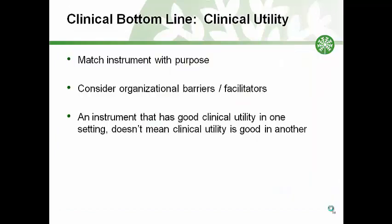The clinical bottom line for clinical utility includes more than ensuring that cost, length, and time are suitable. It is also important that the instrument matches the most important clinical question being asked by the patient and the clinician. Consider organizational barriers and facilitators such as whether the medical record supports tracking of measurements over time. Also consider leadership support for follow-up assessments. Instruments that fit well in one setting may not fit in another due to budget, barriers, time constraints, or current processes. If selecting an instrument for multiple settings within one organization, include stakeholders from each setting in the decision.